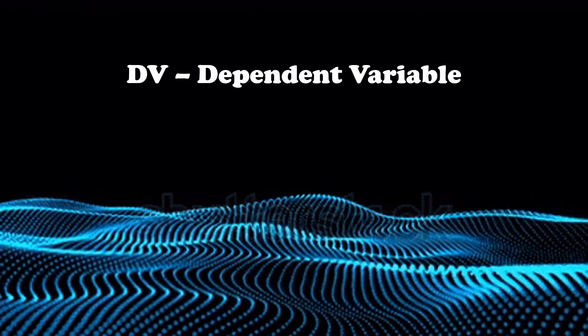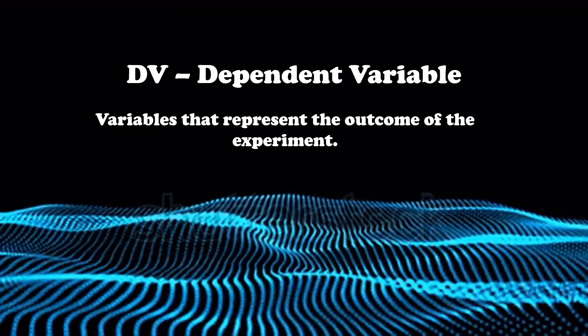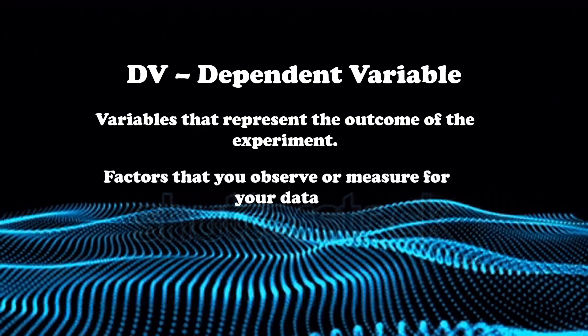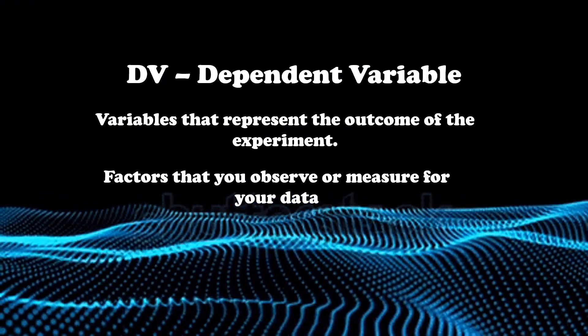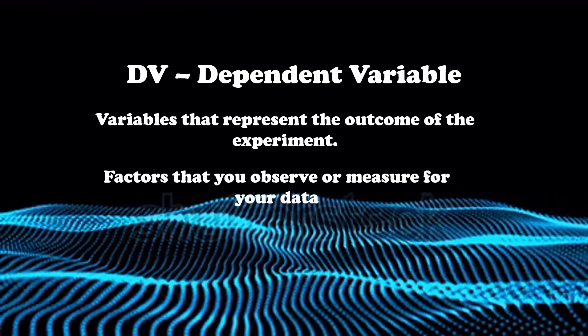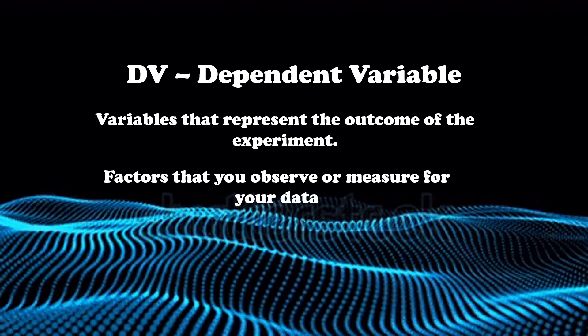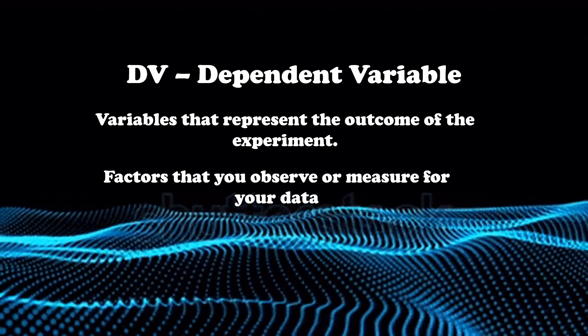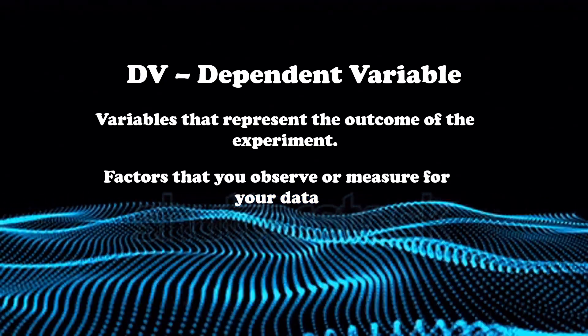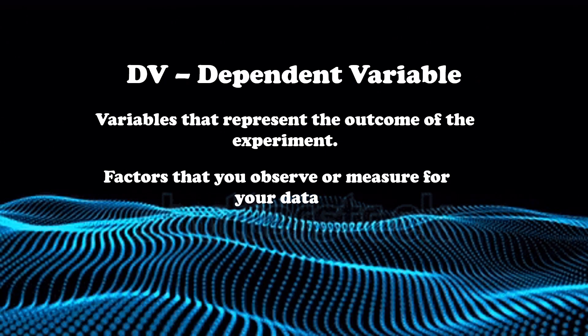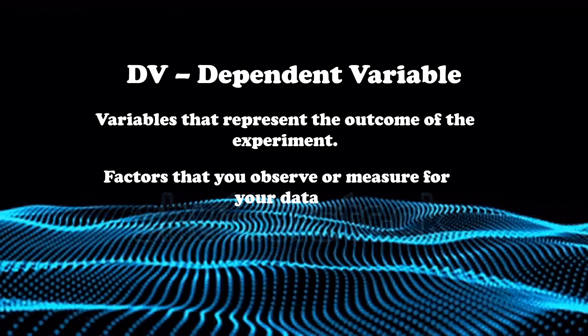Next, dependent variable. These are the variables that represent the outcome of the experiment or the factors that you observe or measure for your data. Going back to our example, independent variable is the main character in the experiment. Whatever happens to it becomes the dependent variable. For example, if the independent variable grows bigger or dies, then dying and growing bigger is the dependent variable.